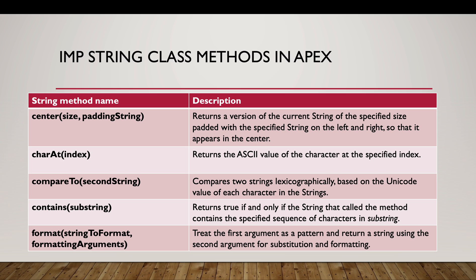Now let's look at important string methods in Apex. I have collated a list of all the important string methods you should know. The first string method is 'center' — this returns a version of the current string with the specified string padded on the left and right side so that the current string appears at the center. Whatever string value and size you put, it will be appended to the left and right side. The second method is 'charAt' — it returns the ASCII value of the character at a specified index.